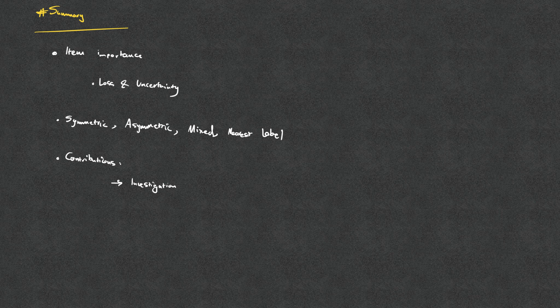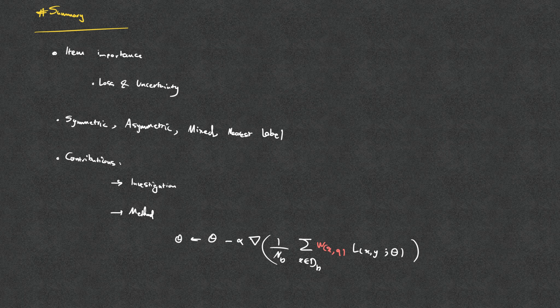One of their main contributions is focusing on these different types of noise and trying to see if there is a difference between the noisy cohort and the clean cohort in terms of loss and uncertainty. For example, they show that symmetric noise is generally easier to identify using loss or uncertainty, but for asymmetric noise it's not as straightforward, and therefore a more advanced technique is needed. The other part is their methodology, which is assigning a weight in the gradient update.